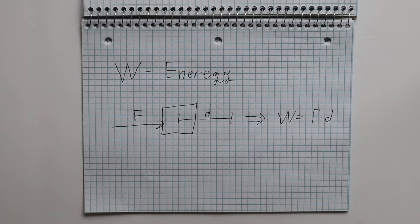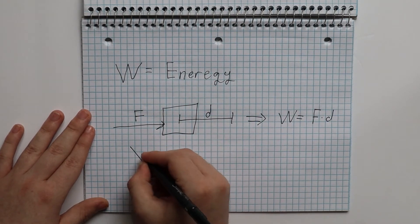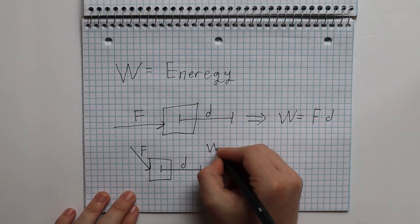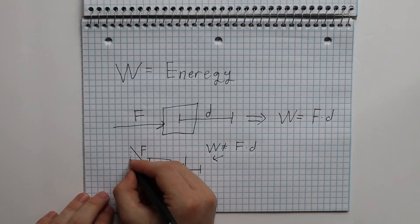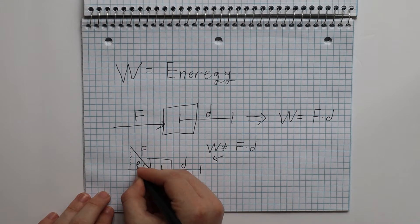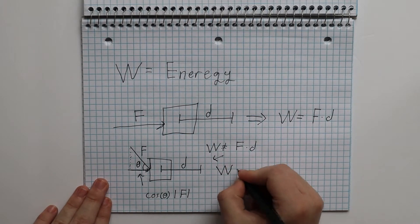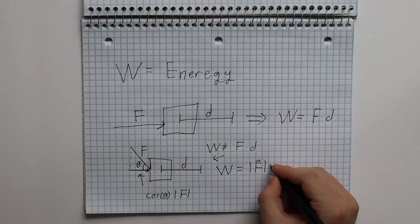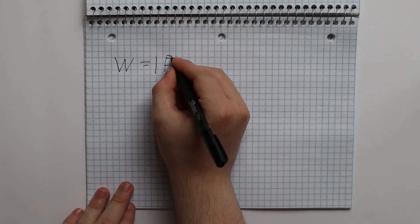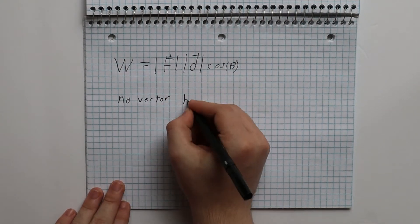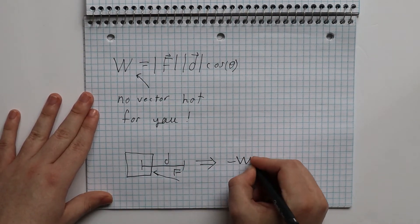Technically, we can only multiply the force exerted in the direction of our displacement. So in a case like this, we can't just naively multiply our force times our displacement, but we must first calculate the magnitude of the force in the direction of our displacement, which with a little trigonometry turns out to be the magnitude of the force times the cosine of the angle between the force vector and the displacement vector. And so our formula for work is: work equals the magnitude of our force times the magnitude of our displacement times the cosine of theta. Notice that work is not a vector — it can be negative if the force vector points in the opposite direction of the displacement vector, but it doesn't point in any direction.